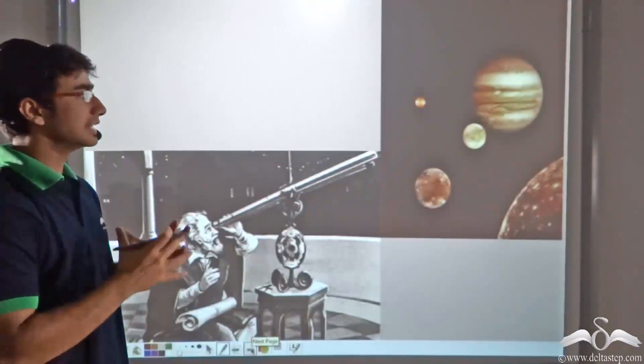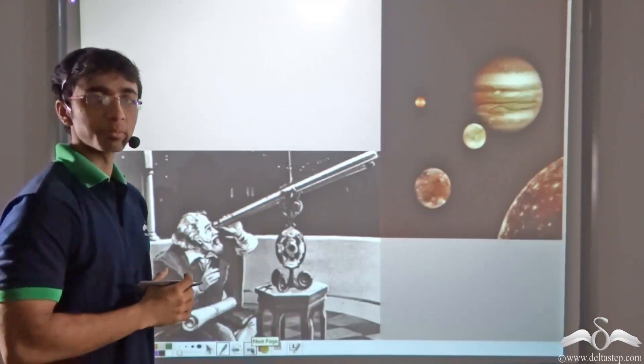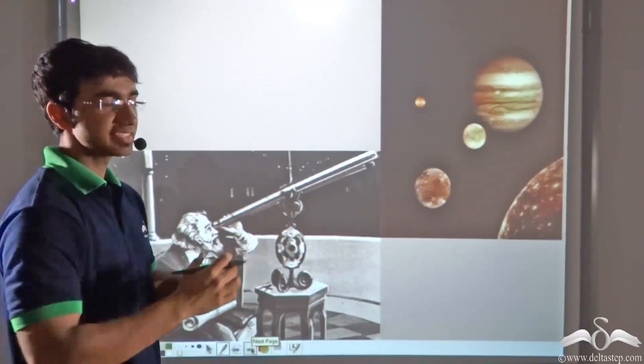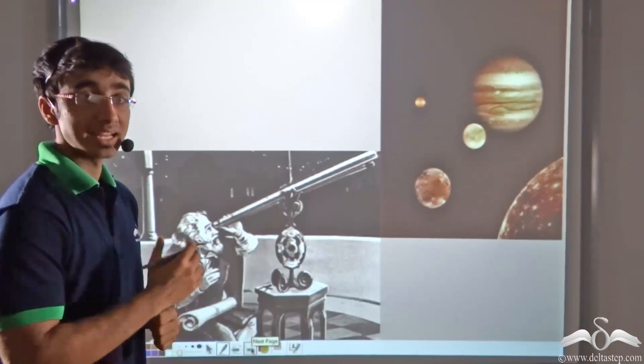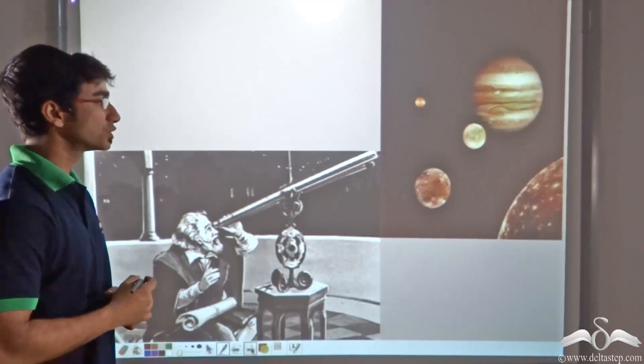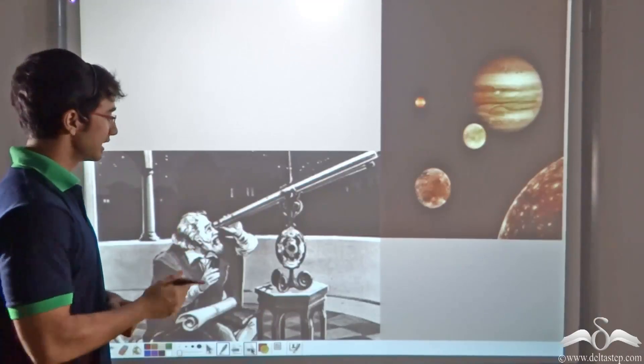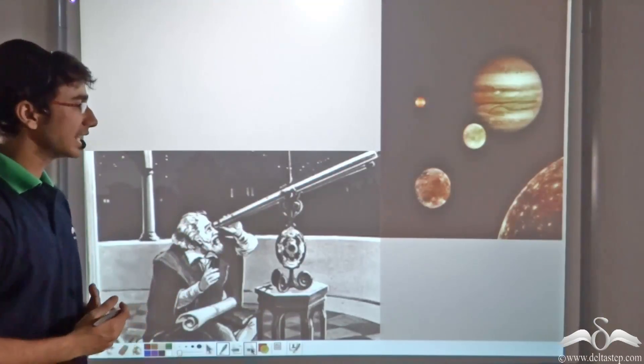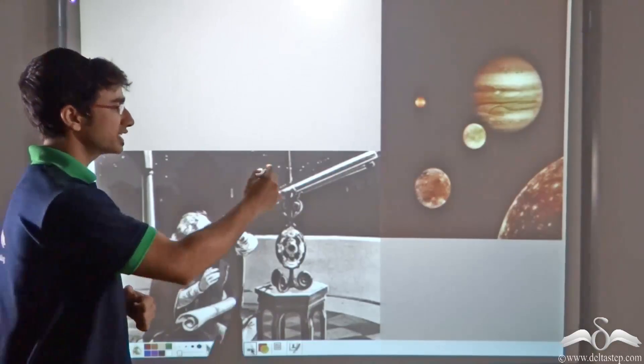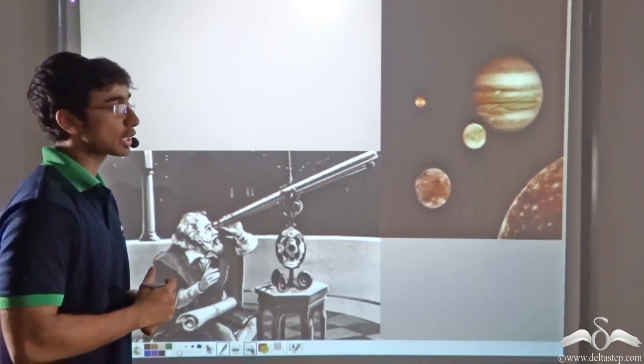Now lenses are not only used to make small things appear big or hazy things appear clear. Lenses are also used to see distant objects. In this picture, you will find Galileo Galilei using an object to see distant far off planets.